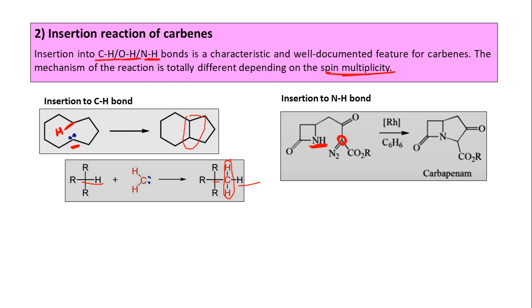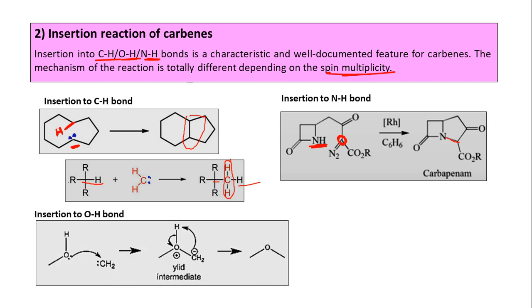Next example: insertion to a nitrogen-hydrogen bond. This carbon is the carbene carbon, and this N-H bond will be broken and carbene will be inserted. So this is the newly generated bond between carbon and nitrogen, this is the newly generated bond — and we are getting a cyclic type of structure.